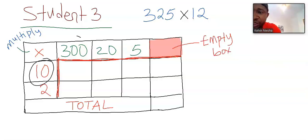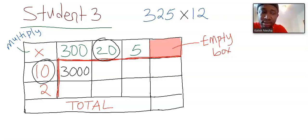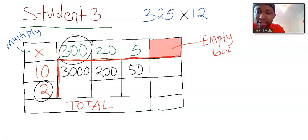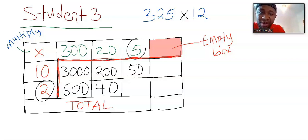Next, 10 multiply by 300, you have 3000. Next, 10 multiply by 20 is 200. Next, 10 multiply by 5, and you got 50. Next, 2 multiply by 300, and you got 600. Next, 2 multiply by 20, and you got 40. Next, 2 multiply by 5, and you got 10.